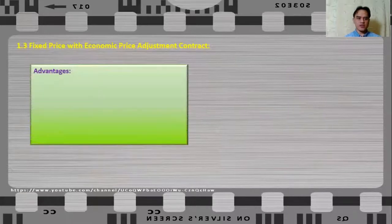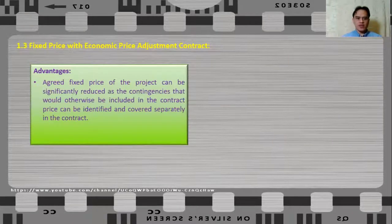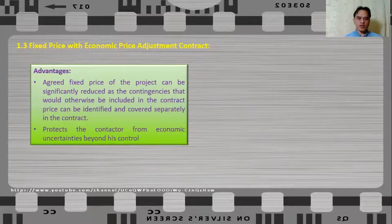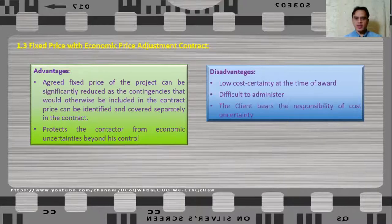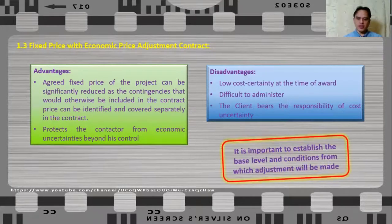The advantages of fixed price with economic price adjustment contracts are: the agreed fixed price can be significantly reduced as contingencies that would otherwise be included in the contract price can be identified and covered separately; and this type of contract protects the contractor from economic uncertainties beyond his control. The disadvantages are: there will be low cost certainty at the time of award; it is quite difficult to administer; and the client bears the responsibility of cost uncertainty. It is therefore important to establish the base level and conditions from which adjustments will be made.